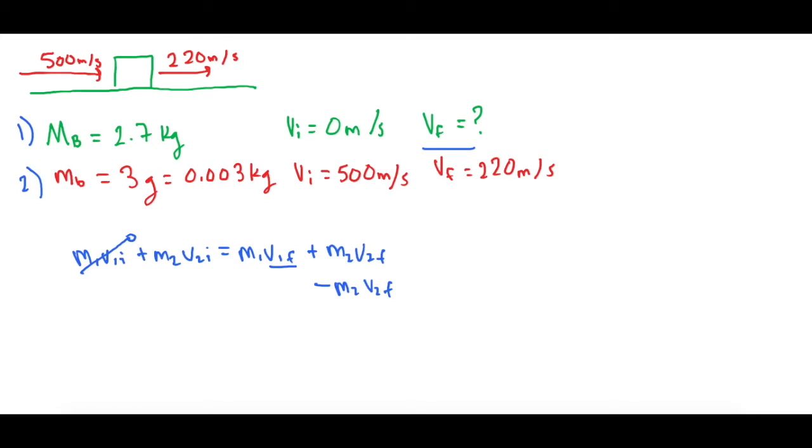So now that leaves us with M2 V2 initial minus M2 V2 final equals M1 V1 final. Okay, so now let's divide over M1. That's gone.